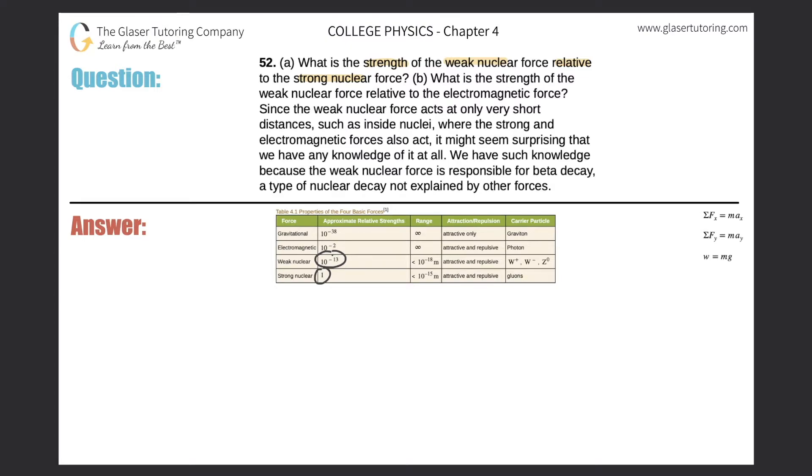And now what they want us to do is they want us to relate the weak nuclear force to the strong nuclear force. So in order to create the right ratio, we're going to do the force of the weak relative to the force of the strong. Whatever you're relating it to always goes in the denominator.